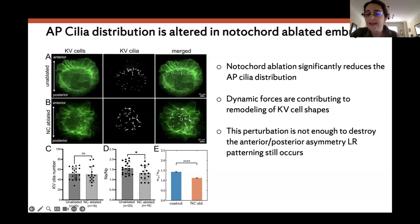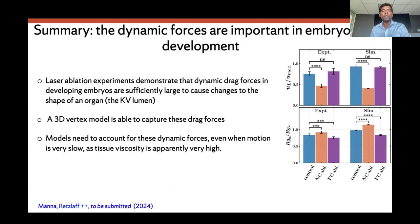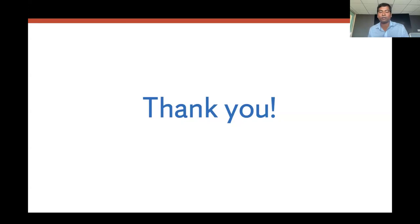To summarize: laser ablation experiments demonstrate that dynamic drag forces in the developing embryo are sufficiently large to cause changes in the shape of the organ. Our 3D vertex model captures these drag forces, and models need to account for these dynamic forces — even when motion is very slow — because tissue viscosity is apparently very high. Notochord ablation also does not affect overall left-right patterning at later stages of development. Thank you all for listening.